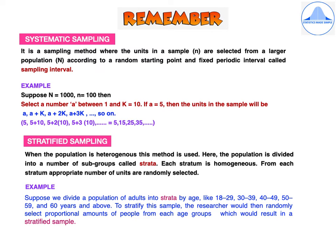The third type is stratified sampling. When the population is heterogeneous, this method is used. The population is divided into subgroups called strata, where each stratum is homogeneous, and from each stratum an appropriate number of units are randomly selected. For example, a population of adults can be divided into strata by age: 18–29, 30–39, 40–49, 50–59, and 60 years and above. The researcher then randomly selects proportional amounts of people from each age group, resulting in a stratified sample.